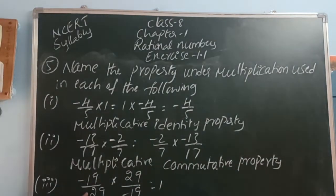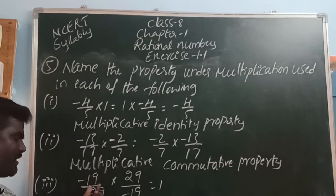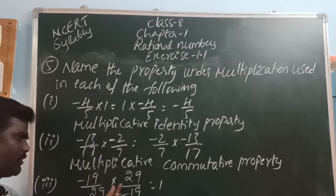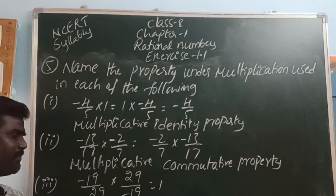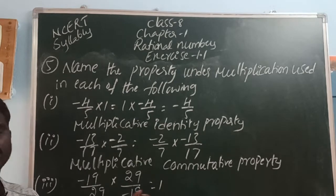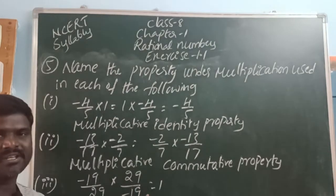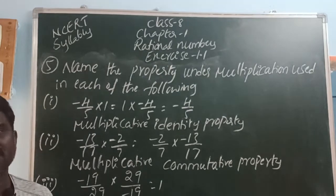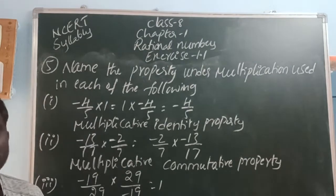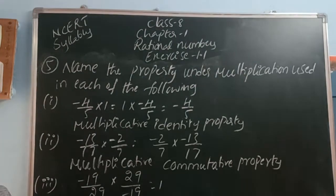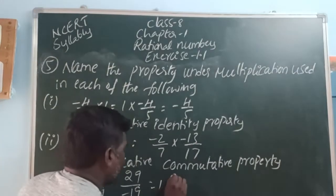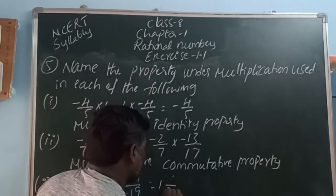Next: minus 19 by 29 into 29 by minus 19 equals 1. A number multiplied by its reciprocal gives 1. That property is called multiplicative inverse property.